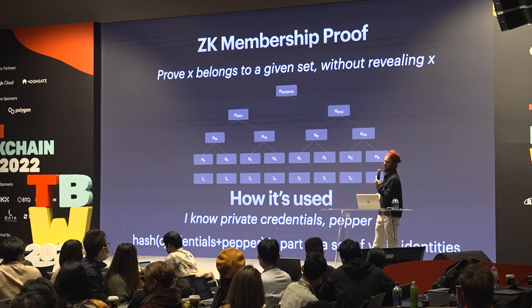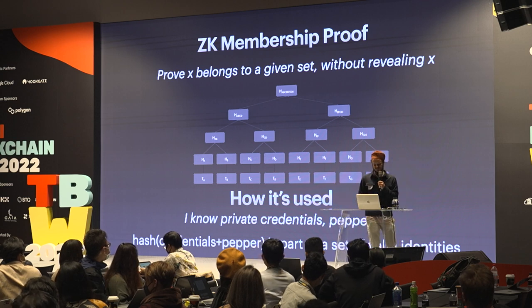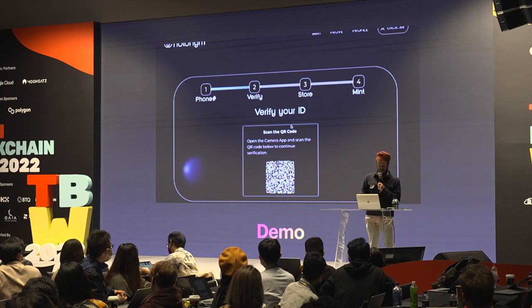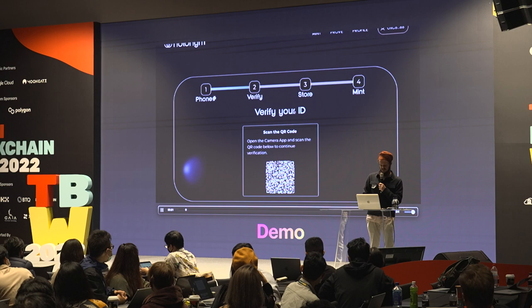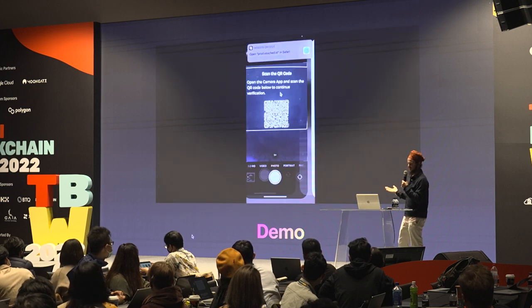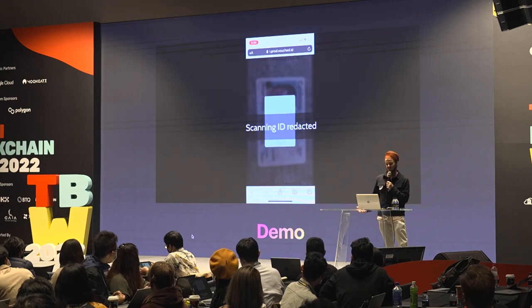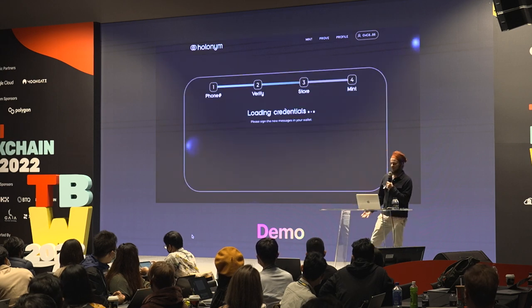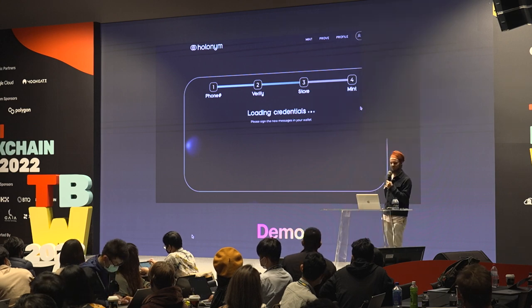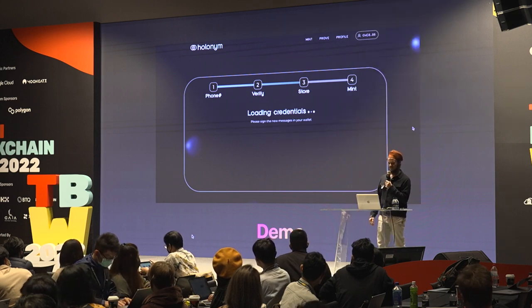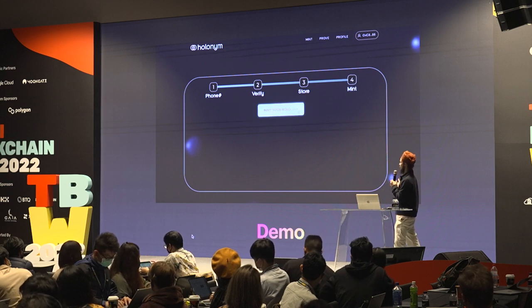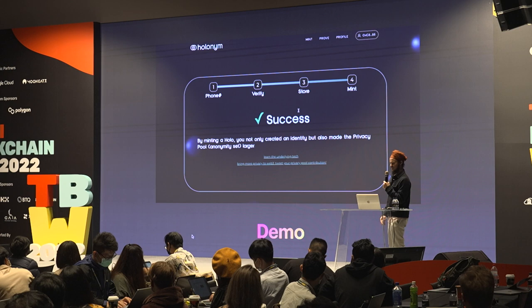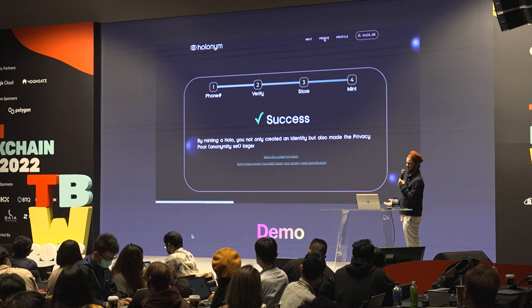We use this to prove you have a valid identity and have passed some sort of KYC, but the person who verified your KYC can't tell who you are and can't track your address. In a standard KYC process, you scan the QR code, do a selfie check, scan the ID, and then submit a proof on chain — we call this minting your Holonym. Behind the scenes it adds your credential to the Merkle tree.